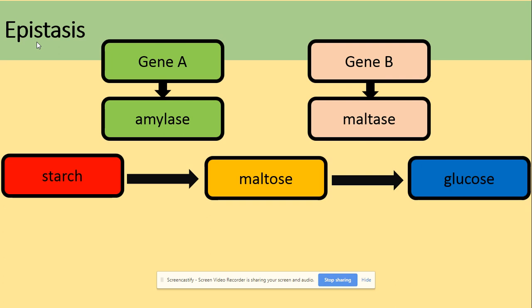If gene A has at least one dominant allele — a capital A — we will get maltose. Then to produce glucose, we need at least one capital B, one dominant allele in that genotype, to break down maltose further to glucose and to produce maltase. But if the dominant allele A is not present — if you've got lowercase a, homozygous recessive for gene A — you're not going to get maltose, because amylase is not being produced.